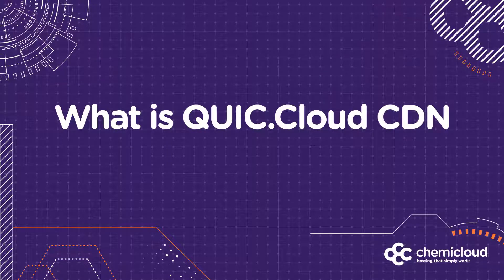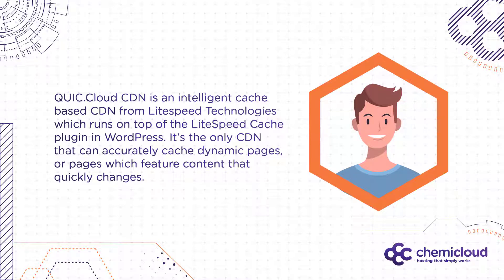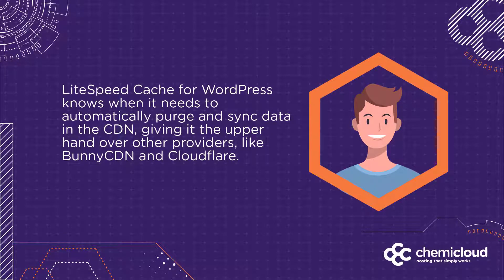QuickCloud CDN is an intelligent cache-based CDN from Lightspeed Technologies, which runs on top of the Lightspeed Cache plugin in WordPress. It's the only CDN that can accurately cache dynamic pages, or pages which feature content that quickly changes. Lightspeed Cache for WordPress knows when it needs to automatically purge and sync data in the CDN, which gives it the upper hand over other providers like BunnyCDN and Cloudflare.